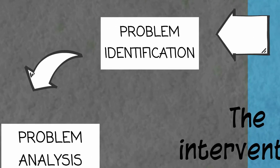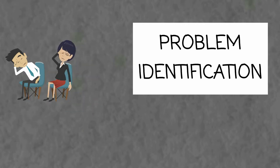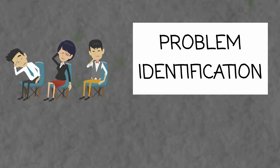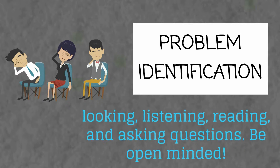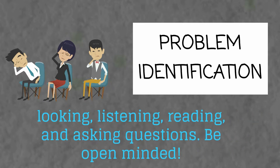In the problem identification, you will be dealing with identifying the problem owners. In many problems, there are multiple owners. They have their own perceptions of the problem, the solution, and the pros and cons of the solution. Identify the problem by looking, listening, reading, and asking questions.